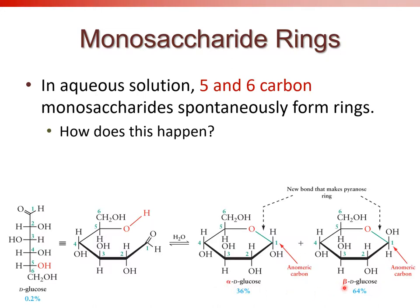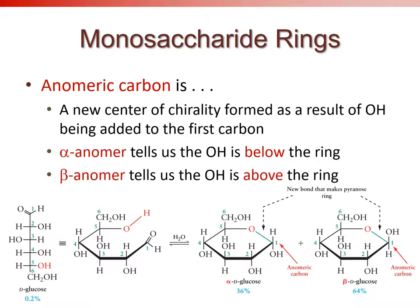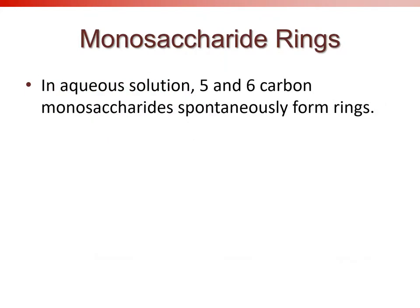The alpha anomer has the OH below the ring at the anomeric carbon. The beta anomer has the OH above the ring. The anomeric carbon is this new chiral center created when the ring forms — it did not exist as a chiral center in the open-chain form.